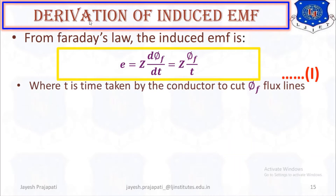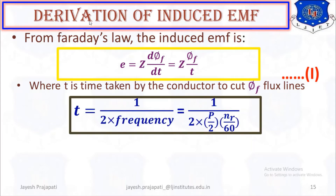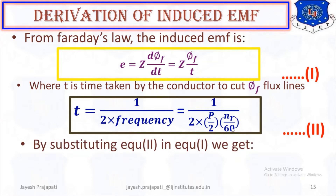Here t is the time taken by the conductor to cut the flux lines. t is given by the equation t equals 1 divided by 2 times frequency. Using the speed equation N equals 120f divided by P, we can make frequency the subject: f equals P times NR divided by 120. This is taken as equation number 2.